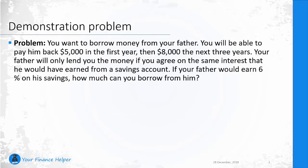Let's go through a demonstration problem. You want to borrow money from your father; you will be able to pay him back five thousand dollars in the first year, then eight thousand dollars the next three years. Your father will only lend you the money if you agree on the same interest that he would have earned from a savings account. If your father would earn six percent on his savings, how much can you borrow from him? Try to calculate this yourself and pause the video.